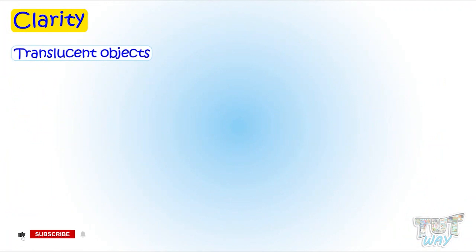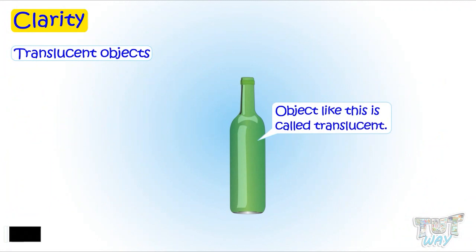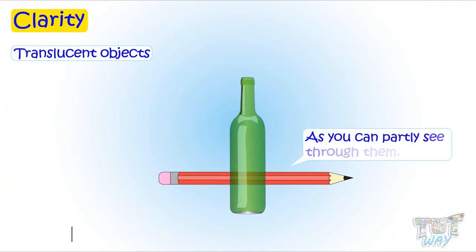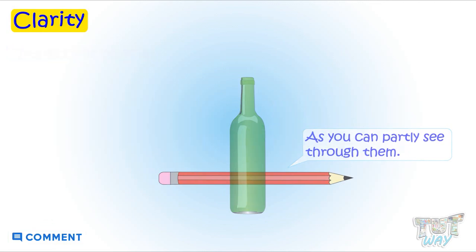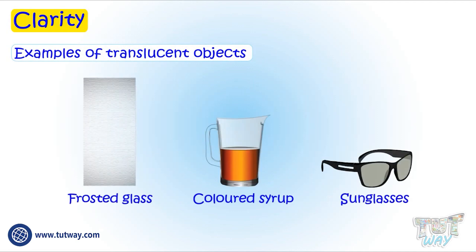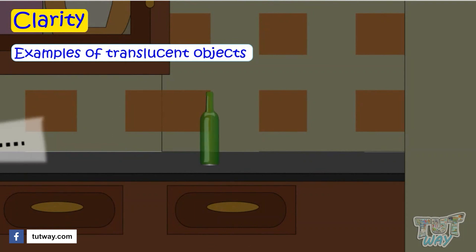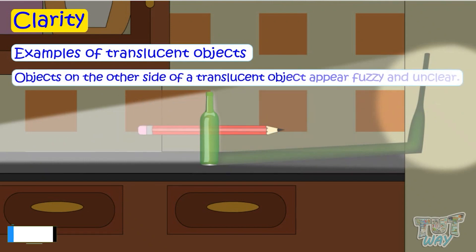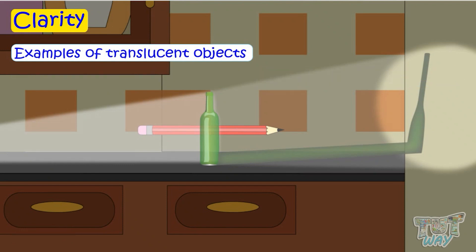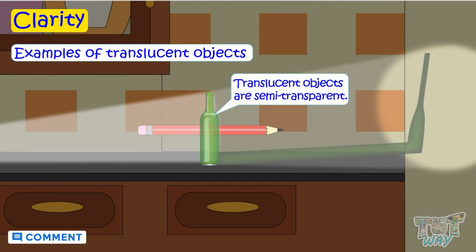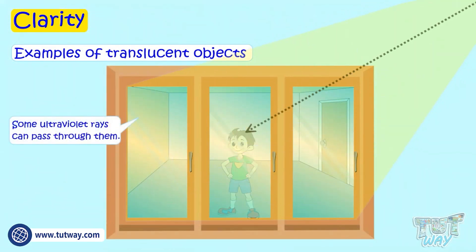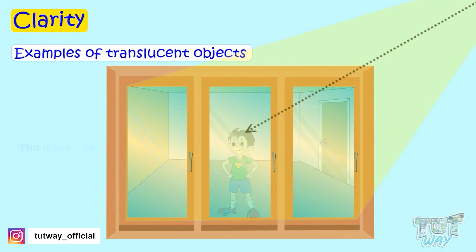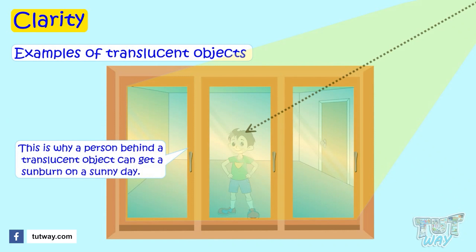Translucent objects: this object is not transparent but translucent, as you can only partly see through it — not clearly. Materials like frosted glass and some plastics are called translucent. When light strikes translucent materials, only some of the light passes through them, so we cannot see clearly through them. Objects on the other side appear fuzzy and unclear because translucent objects are semi-transparent. Some ultraviolet rays can go through them, which is why a person behind a translucent object can get a sunburn on a sunny day.